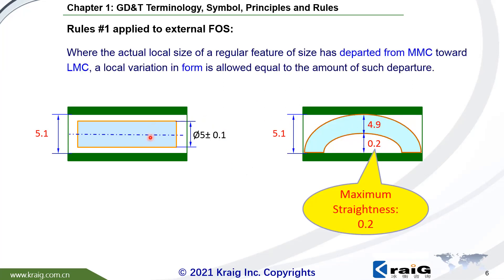If the diameter is smaller, then you are allowed to deform. The smallest diameter is 4.9, so the local size is 4.9. In this case, you will get a maximum deviation of 0.2, or maximum straightness. From here we know that Rule No. 1, if applied to the size tolerance, will control the maximum deviation of the form.